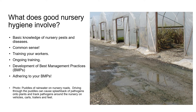So what does good nursery hygiene involve? Firstly, it helps to have some knowledge of pests and diseases, their life cycles and the conditions in which they thrive, so we know what we're trying to prevent and can identify the problem if and when it does show up. Some pests and diseases are specific to certain crops, but many, especially water and soil-borne organisms such as Pythium and Phytophthora, which are both water molds, are common to all nursery types and propagation systems, so none of us should be thinking that we're immune from any of these problems.